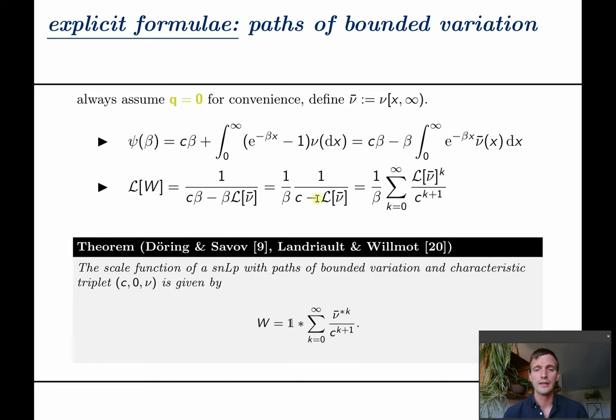For the scale function's Laplace transform we obtain this limit of a geometric series and note that for this identity to hold we need that this is eventually less than C but as it tends to zero we are good. After inverting the Laplace transform we may state this theorem with this expression which was shown by Döring and Savov and for compound Poisson processes by Landriault and Willmot. Although this convolution power series is not new it does demonstrate the main idea.